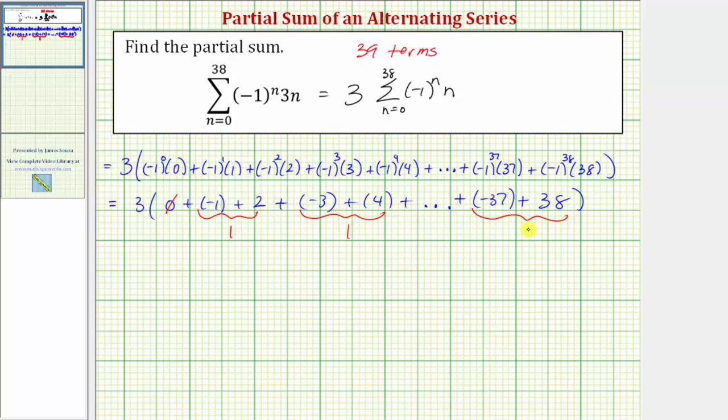So notice how this partial sum is really just three times the sum of a certain number of ones. So if we can determine how many ones we're summing, we can determine this partial sum.